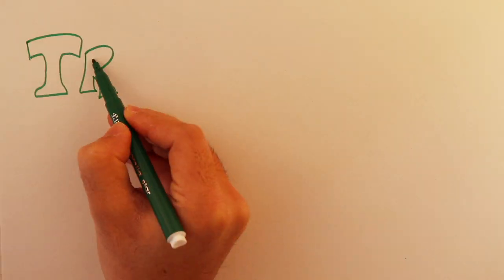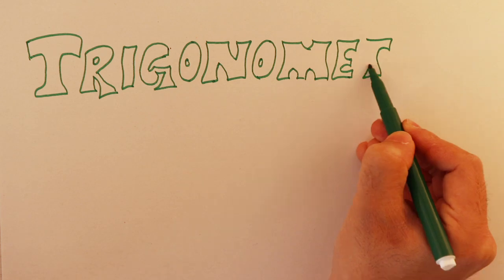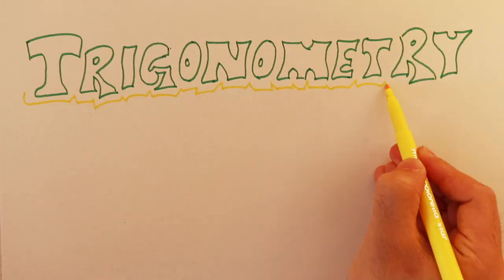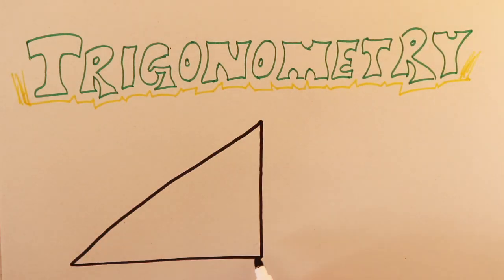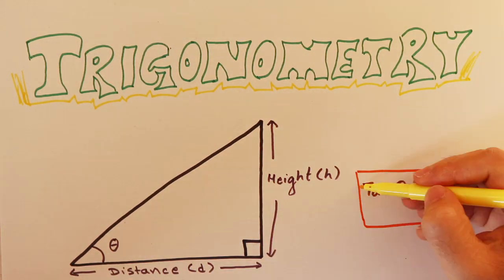At the heart of measuring the height of any mountain relies on the basic concept of trigonometry. The way it works is in any right-angled triangle, by knowing the value of an angle and the distance of the specific side, you can work out the height of a triangle with this wonderful looking equation.